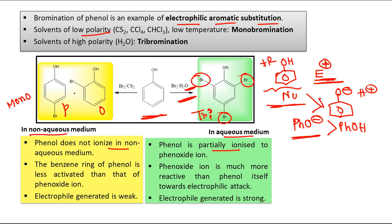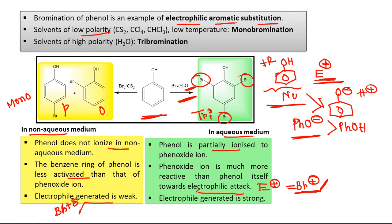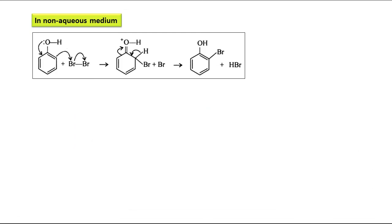That is why you get tribromination — the benzene ring of phenol is less activated in non-aqueous medium because it is not in ionized form. In aqueous medium, phenoxide is much more reactive than phenol itself toward electrophilic attack. Also, in non-aqueous medium the electrophile generated is weak — bromine carries only a partial positive charge — whereas in aqueous medium the electrophile generated carries a fully formed positive charge (Br+), making it a stronger electrophile.